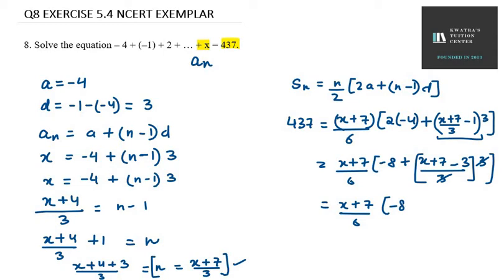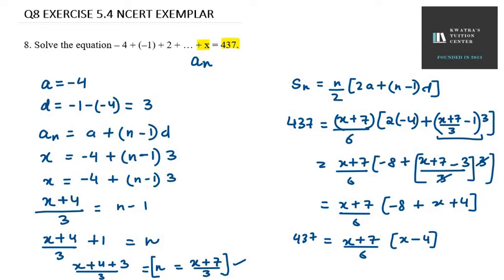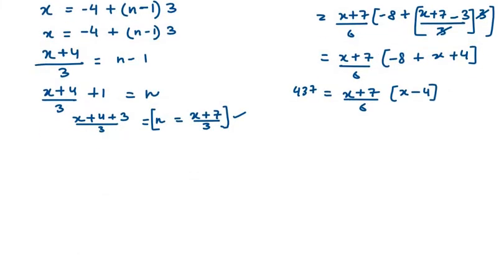Inside the bracket, 7 minus 3 gives plus 4, so we have minus 8 plus 4 equals minus 4 combined with x. So we get 437 equals (x plus 7) over 6 times (x minus 4). We can see this will give us a quadratic equation, and from that quadratic equation we can find the value of x.